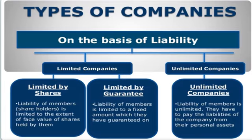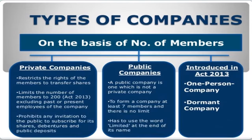On the basis of number of members: private companies and public companies, introduced in the Companies Act 2013. Under private companies: restrict the right of the members to transfer shares; limit the number of members to 200 as per Act 2013, excluding past or present employees of the company; prohibit any invitation to the public to subscribe for its shares, debentures, and public deposits. A public company is one which is not a private company; to form a public company, at least seven members are required with no upper limit, and it uses the word 'limited' at the end of its name. Also introduced in Act 2013: one person company and dormant company.